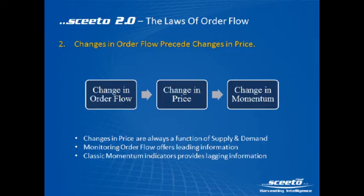As you can see, the market was a little bit choppy before, it looked to be going down, then of course the order flow changed, meaning more buyers came into the market and up the market went.